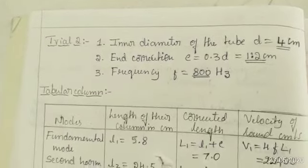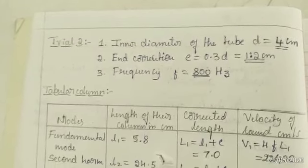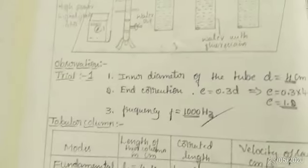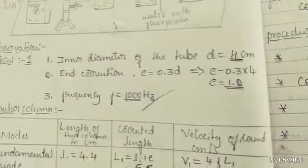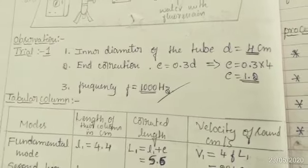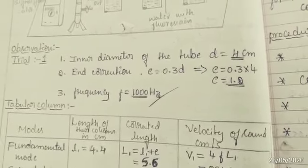End correction E is equal to 0.3 into D, that is 0.3 into 4 centimeter, this is 1.2 centimeter.